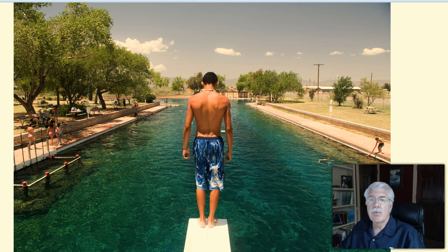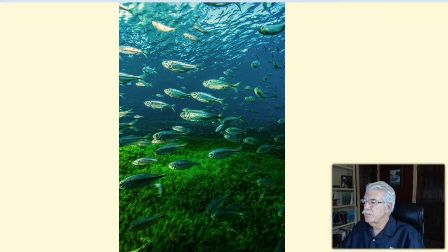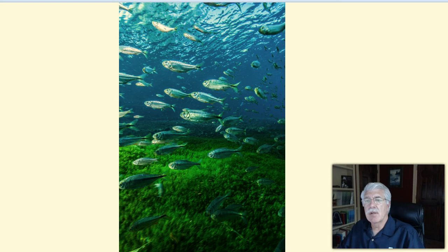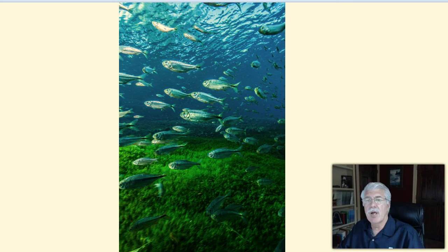After leaving the swimming pool, spring waters flow through the San Solomon Cienega. Here are some of the species that live there. This particular species is the Mexican tetra. Also living in this desert wetland area are two endangered desert fish: the Pecos gambusia and the Comanche Springs pupfish. Pecos gambusia have a very limited distribution, and the Comanche Springs pupfish are only found in the waters of the Balmorhea Springs.